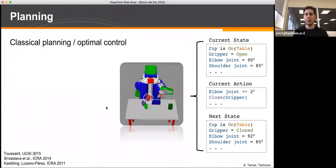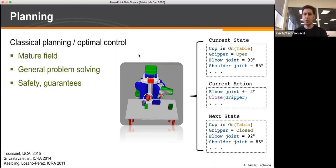When I say planning, I mean any method that first requires a manual model of the world and then searches with that model to figure out a plan. Take for example a peer robot that needs to set up a dinner table. You can represent the state by the position of objects and robot configurations, and then search for a sequence of actions, assuming we know how each action affects the next state of the world.